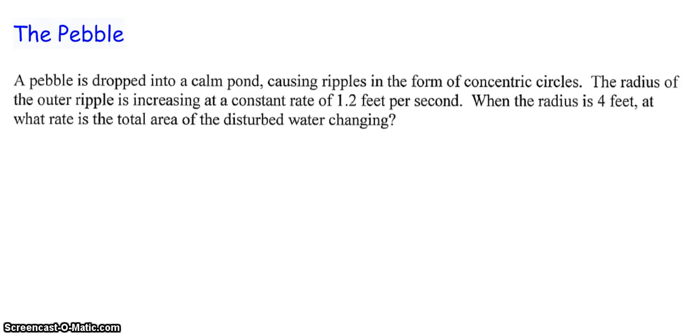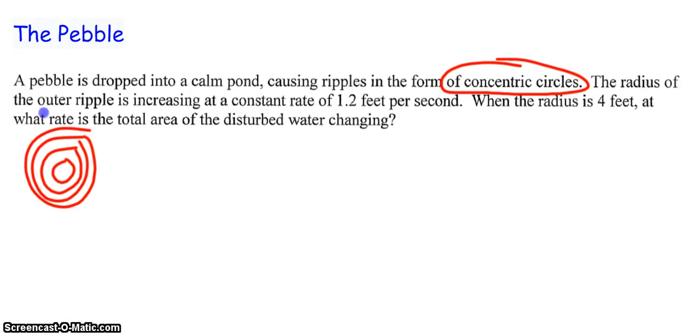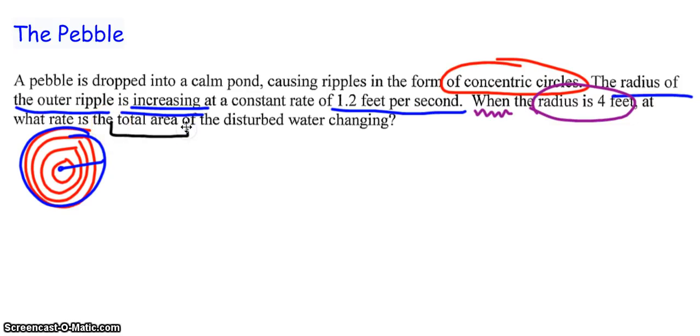All right, so let's talk about the pebble problem. Okay. You guys know how to read, but I'm going to highlight important information. Well, I can read and you highlight. A pebble is dropped into a calm pond, causing ripples in the form of concentric circles. So that means they have the same center. So it's like, bloop, into the pond, and then rings of water. The radius of the outer ripple, so like the biggest circle, is increasing at a constant rate of 1.2 feet per second.